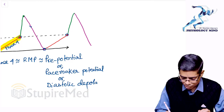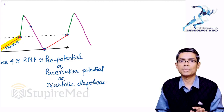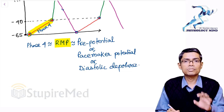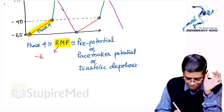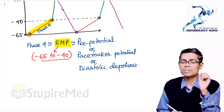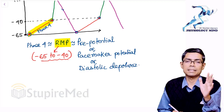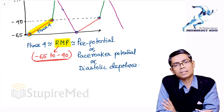This spontaneously moving RMP is also known as diastolic depolarization — all these names are very important MCQ terms. Initially the SA node RMP was given as minus 50 mV and AV node as minus 60 mV. However, Harrison's gives the nodal tissue RMP as a range: minus 65 to minus 40 millivolts. For single best answer MCQs: SA node = minus 50 mV, AV node = minus 65 mV. If a range is given, mark minus 65 to minus 40 mV.